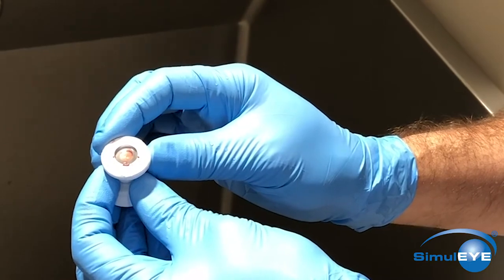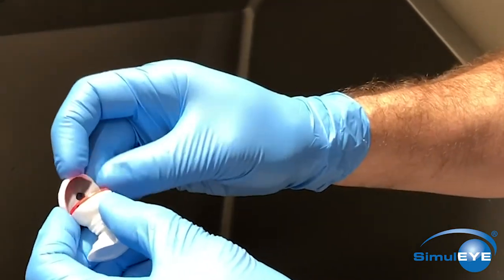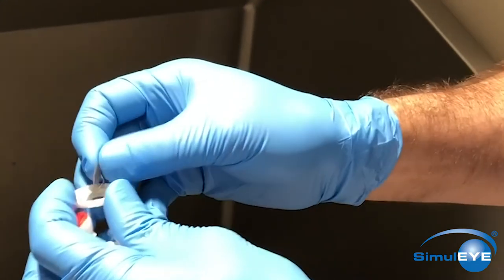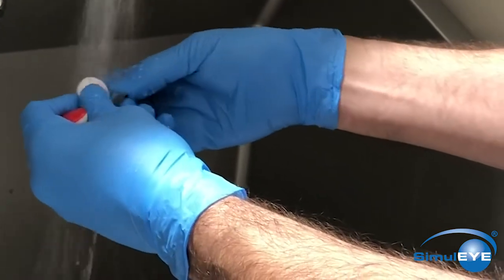When finished using the stimuli and ready to clean it, simply pop the cornea cap off by removing the whole top section, remove the iris membrane, and wash all the parts underneath the water to remove all the viscoelastic.